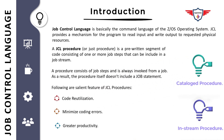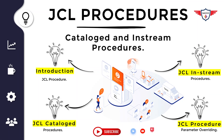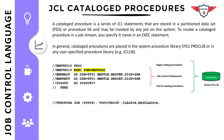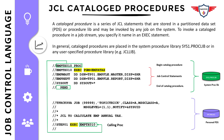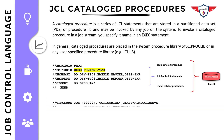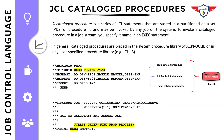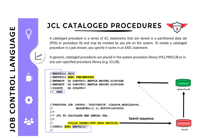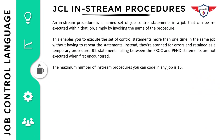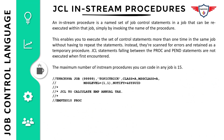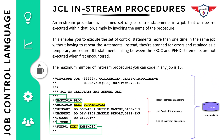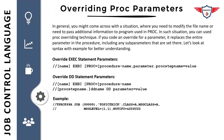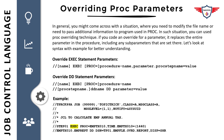In the second section we will focus on catalog procedures and see how you can define and call these procedures from your JCLs, and also understand how the system searches for a specific procedure in case you store that procedure in a separate library other than the system library. In the third section we'll focus on JCL in-stream procedures and see how you can define and use them. In the last section we will focus on how to override the proc parameters and job control statements in your JCL.